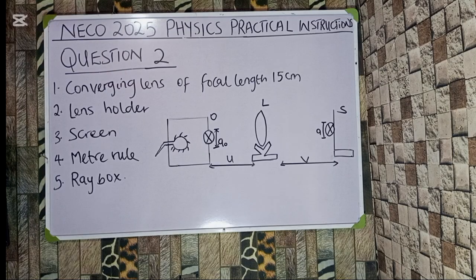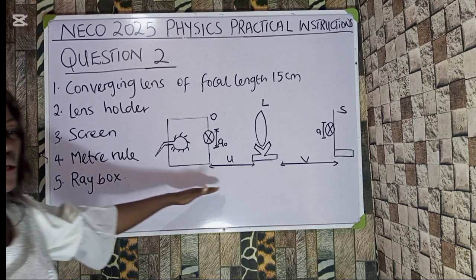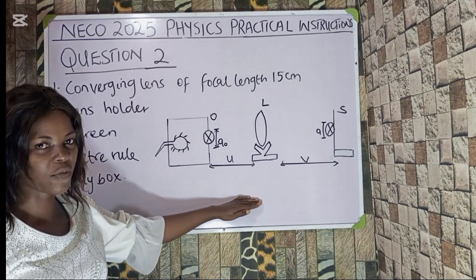Question two. They asked to provide converging lens of focal length 15 centimeters, lens holder, screen, meter rule, and ray box.